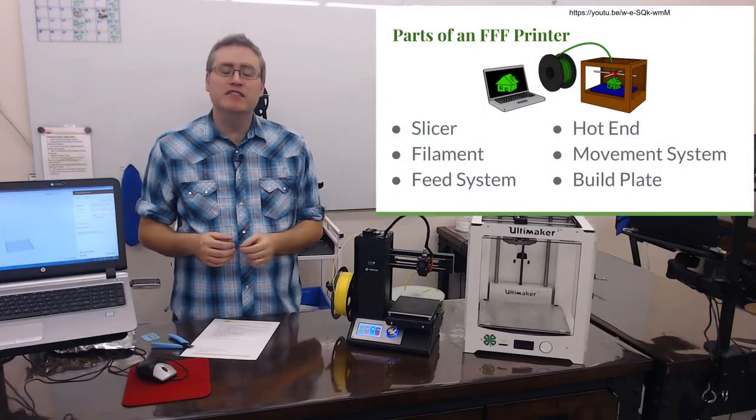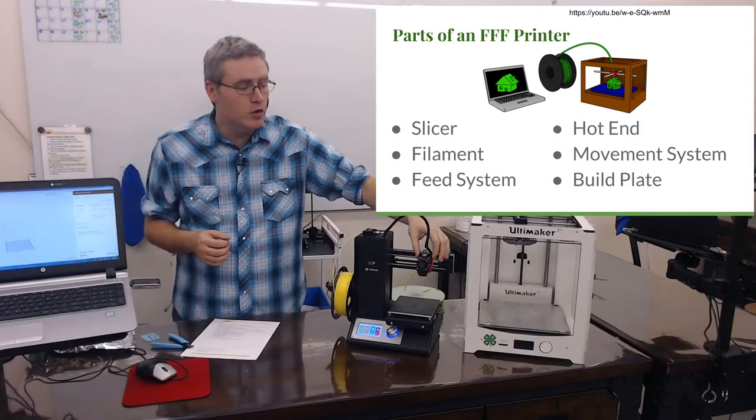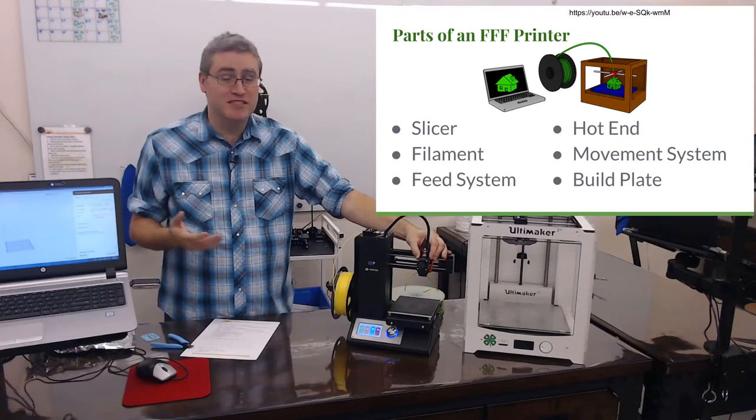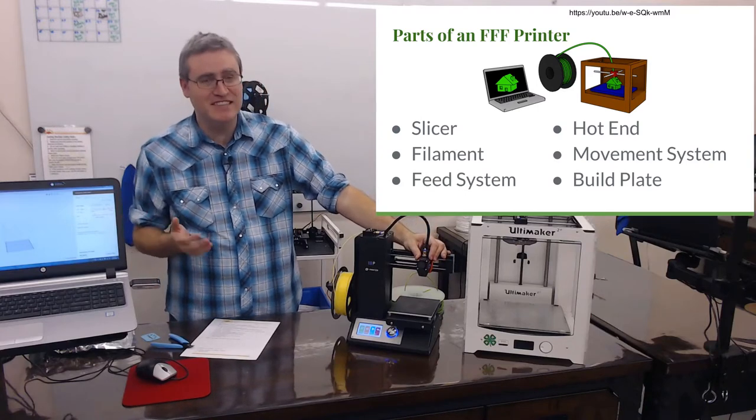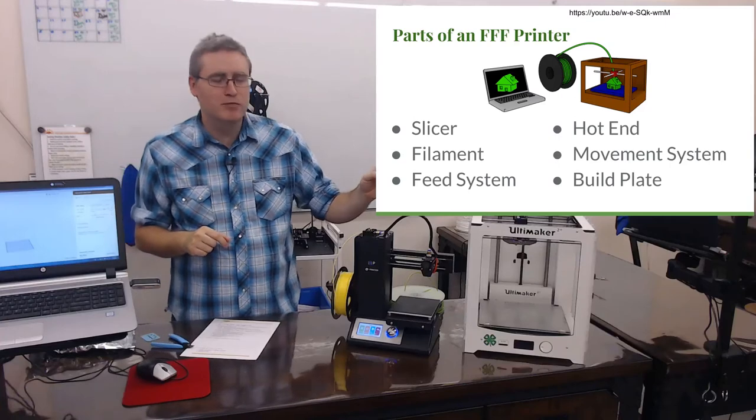Now after the feed system does its job, it's pushing the filament through and the filament is going to the hotend. We call this the hotend because you guessed it, it does get hot, about 200 degrees Celsius, hot enough to melt the plastic and squirt it out of the little opening that it has so that it comes out in a fine spray.